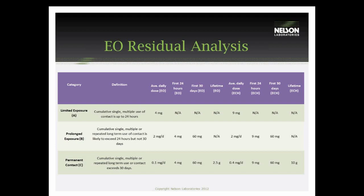There are specific EO residual levels that are allowable on the device, dependent upon which type of device it is. For a limited use device, the most EO you can have on the device is 4 milligrams, determined based on a worst-case situation for how long the device will be in contact with the patient. We recommend for limited use devices that they are tested for three times the expected patient contact time to simulate a worst case. For EO that is 4 milligrams allowed, and for ECH 9 milligrams. We also test for ethylene glycol, though the standard does not have set limits for that.